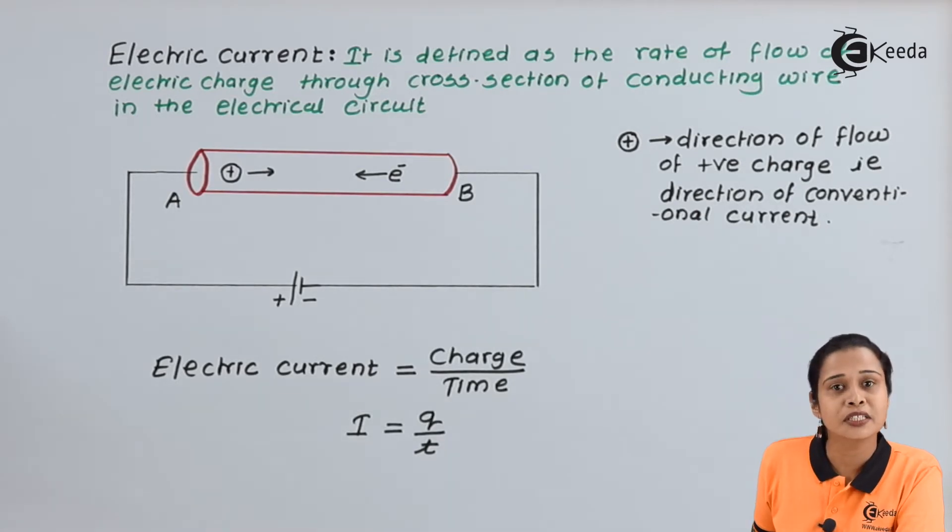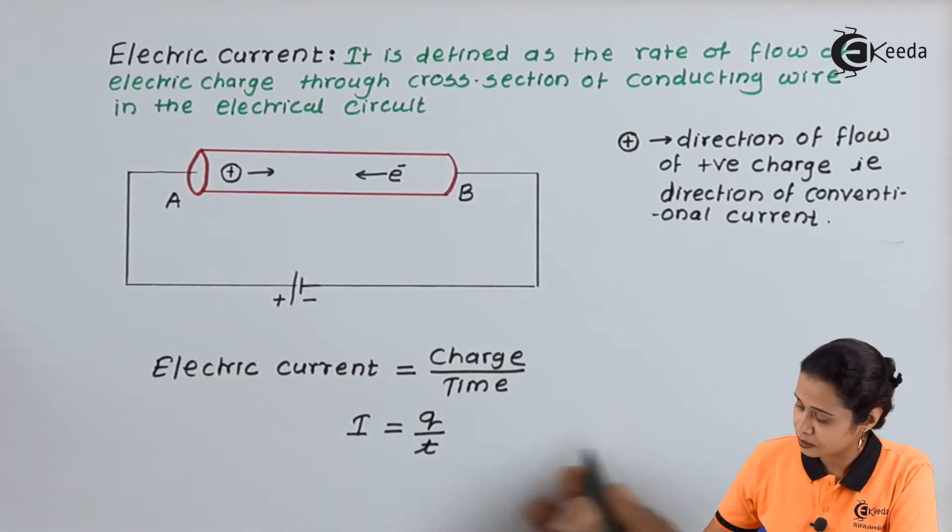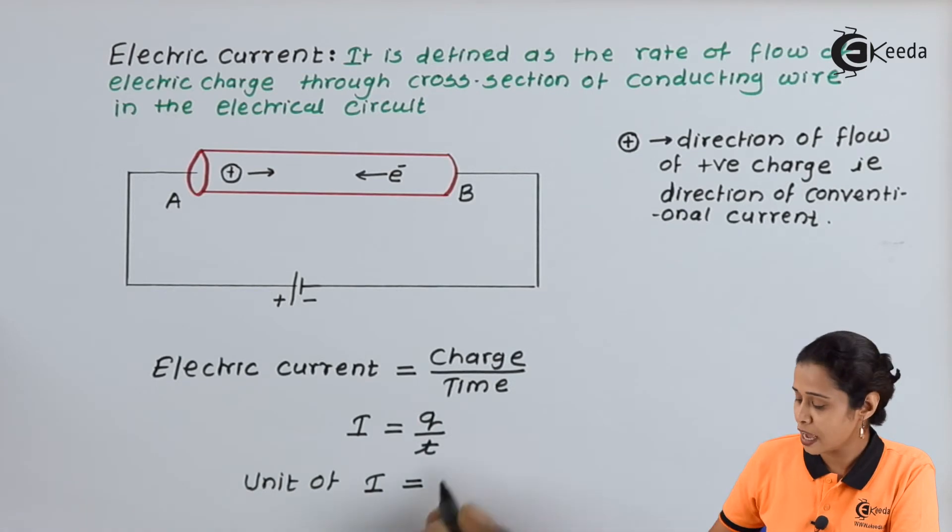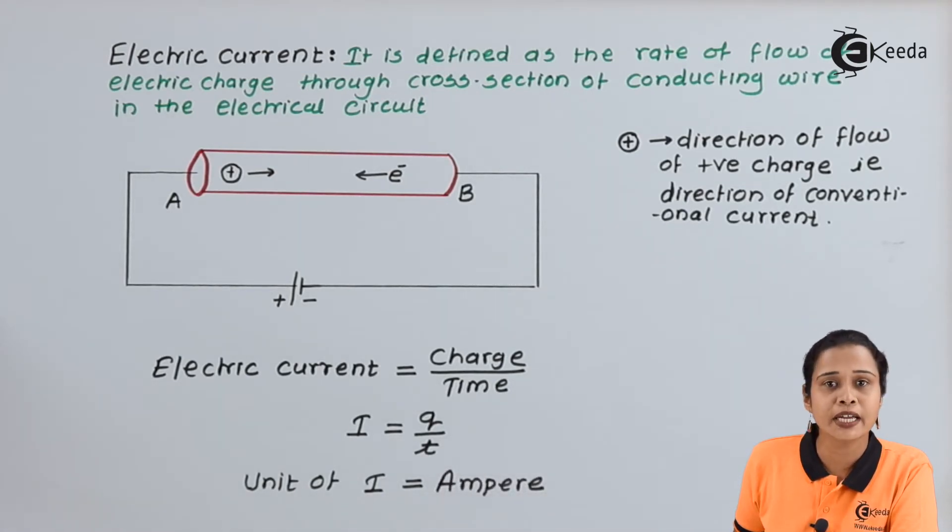Now, let us write down, what is the unit of electric current? Here, unit of I, that is electric current, is amperes, which is denoted by capital A.